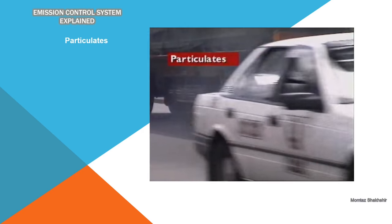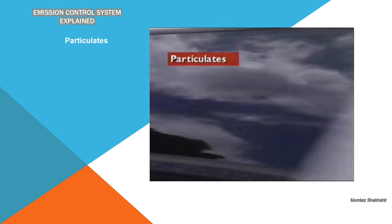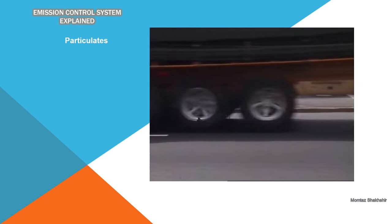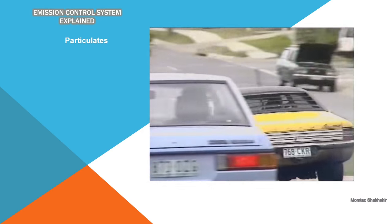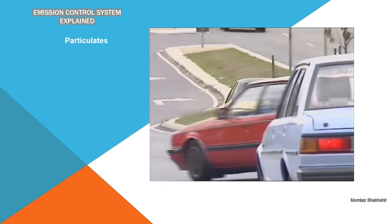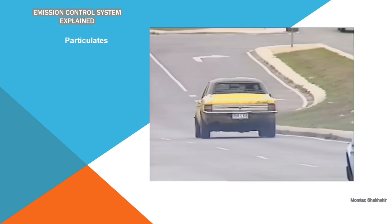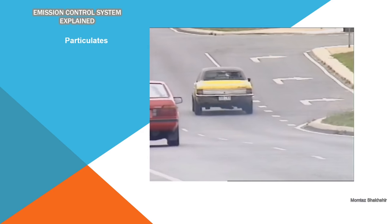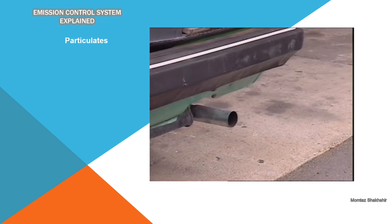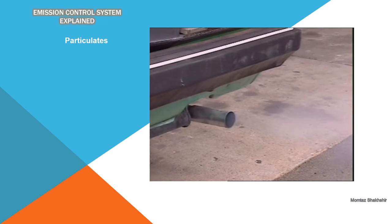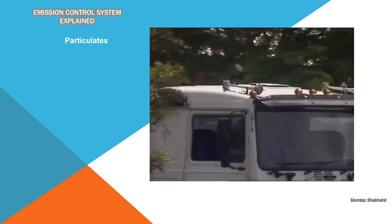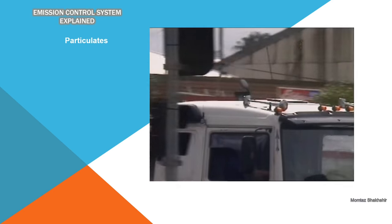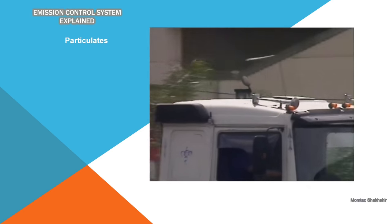This section examines particulates. Particulates from modern engines are usually carbon-based, while older vehicles may produce lead-based particulates caused by lead compounds used in the fuel to raise its octane rating. In spark ignition engines, particulates are caused by incomplete combustion of rich air-fuel mixtures. In compression ignition engines, they are caused by a lack of turbulence and lack of oxygen.